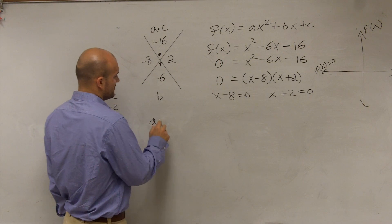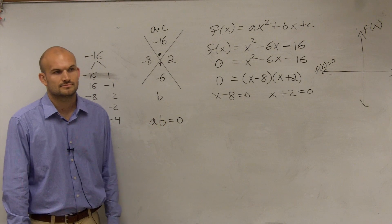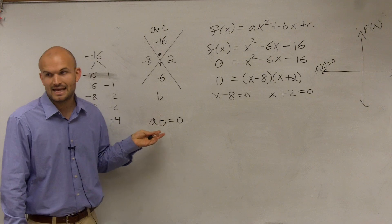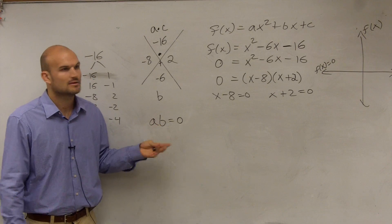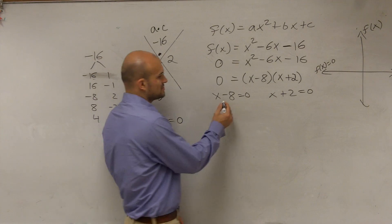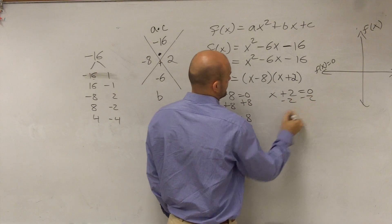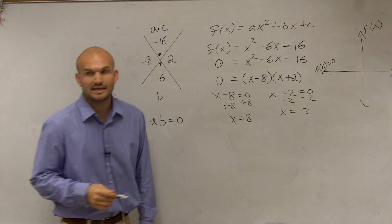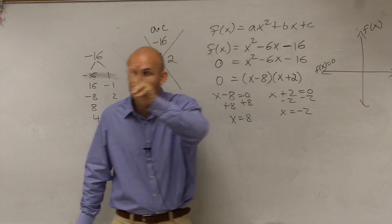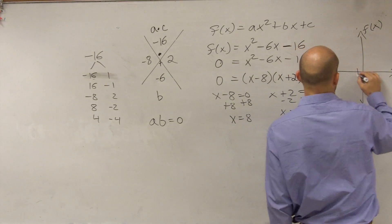Think about it this way: if A times B equals zero and A is five, what does B have to be? Zero. If A is negative one-fifth, what is B? Zero. Both can be zero. That's why we set them both equal to zero and then solve. So x equals negative two. That means my graph crosses this x-axis — it has two solutions. Remember, a graph either has one, two, or none. So my graph crosses at negative two and at eight.